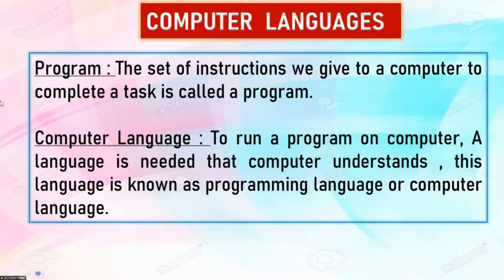First, let's understand what a program is. The set of instructions we give to our computer to complete a task is called a program. Now, what is a computer language? A computer doesn't understand human language — it has its own language. So to run a program on a computer, a language is needed that the computer understands, and this language is known as a programming language or computer language.